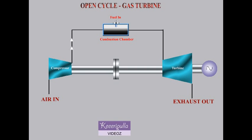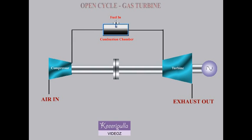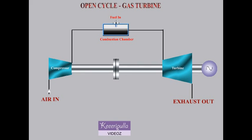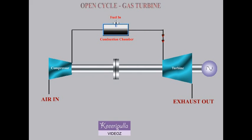The Open Cycle Gas Turbine. The schematic diagram of the Open Cycle Gas Turbine is shown here. In this Open Cycle Gas Turbine, air from the atmosphere is taken into the compressor and compressed.